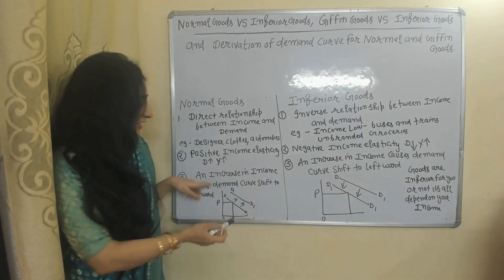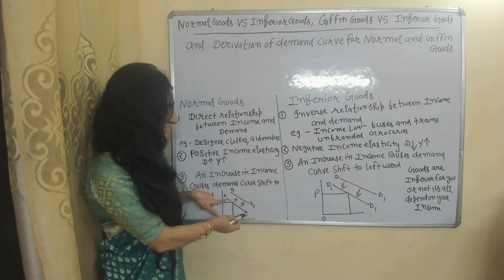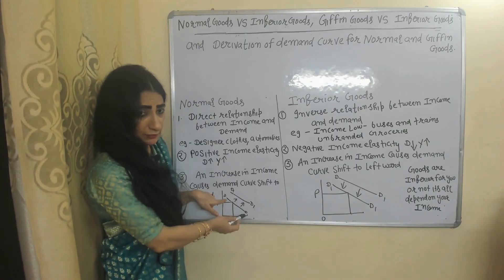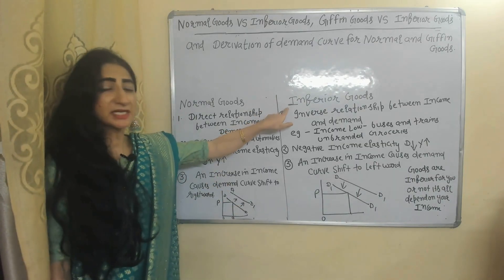In case of normal goods, when income increases, the demand curve shifts rightward. Here you can see when income increases, our demand curve shifts rightward from DD to DD1.